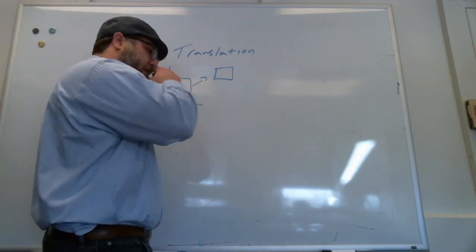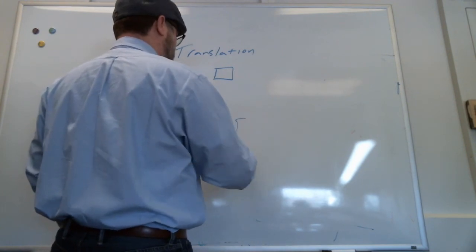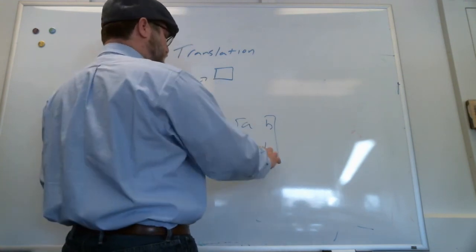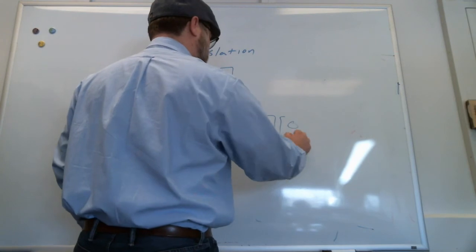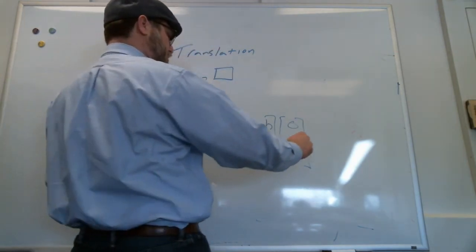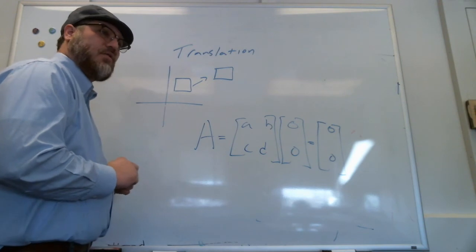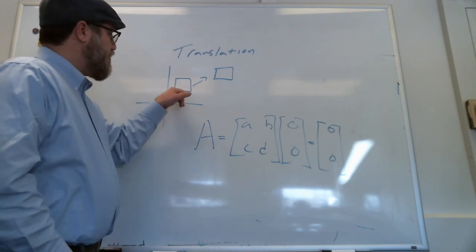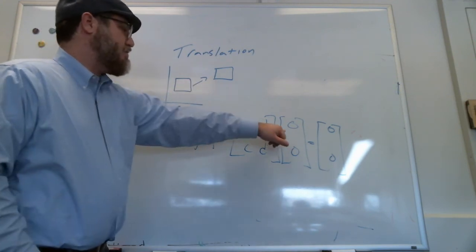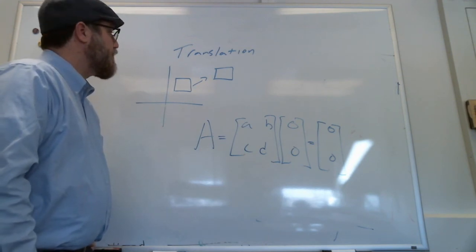And also notice that every single one of these transformations, so let's just make up an arbitrary matrix A B C D, no matter what values of A B C and D are, if we multiply it by the zero vector which is the origin in our system, we always get zero zero out, right? So there's no way to describe a translation and still make it invariant at the origin.